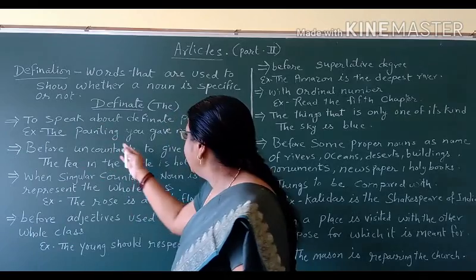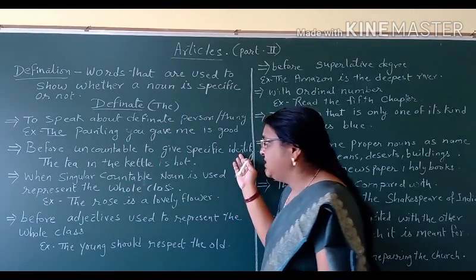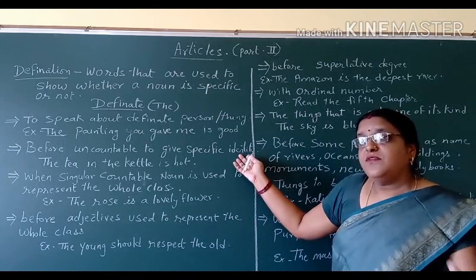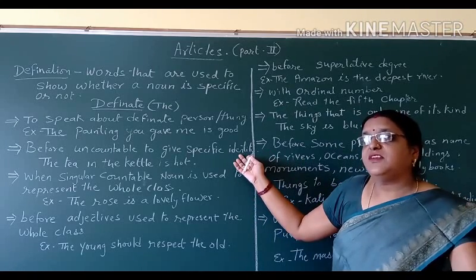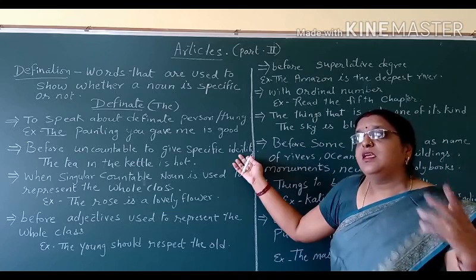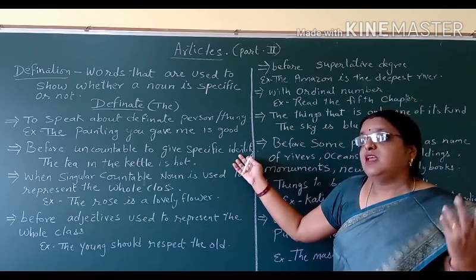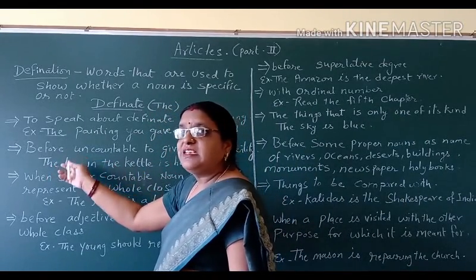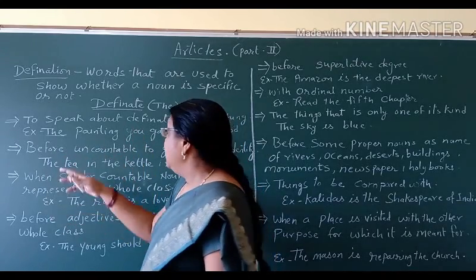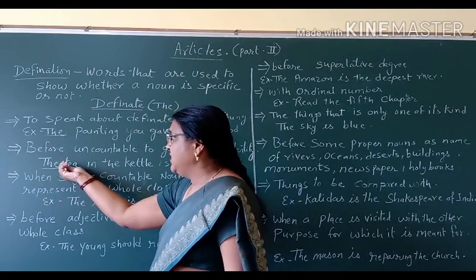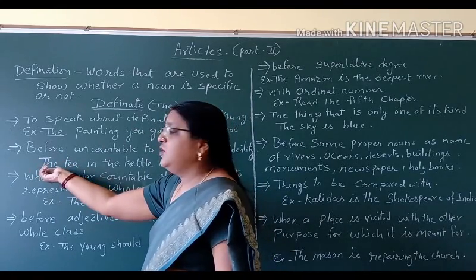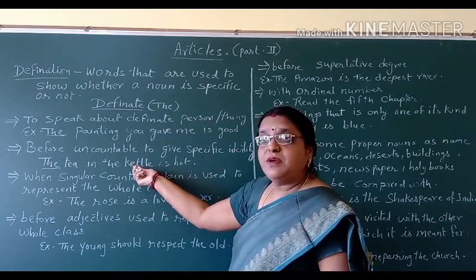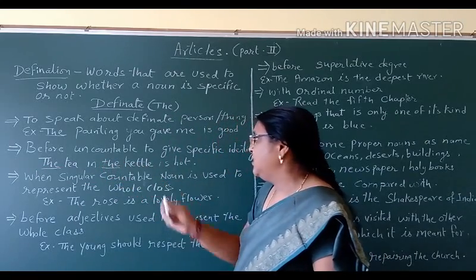The next rule: before uncountable nouns, to give specific identity. I have told you that we don't usually put an article before uncountable nouns, but when we are going to tell about a definite or particular thing, then we use the definite article 'the.' Example: 'The tea in the kettle is hot.' That means we are talking about a definite tea that is present in the kettle. Tea is uncountable, but we have still put the article here because it refers to tea in a particular kettle.